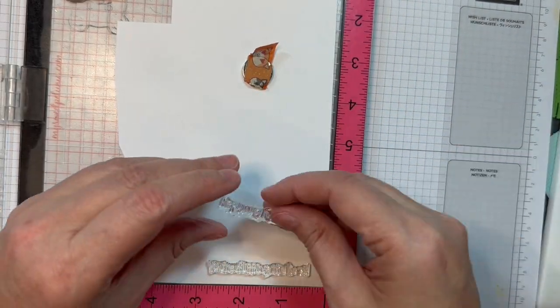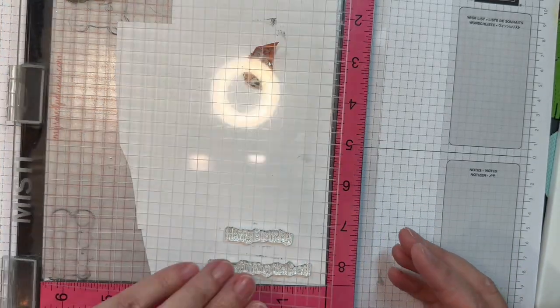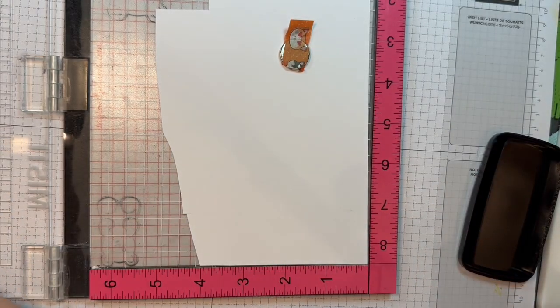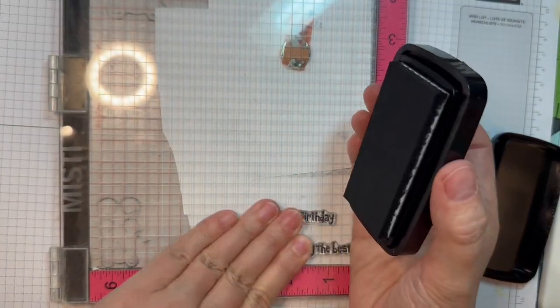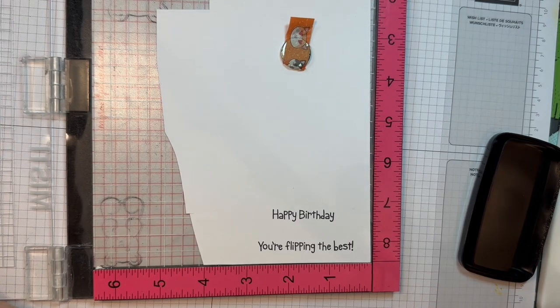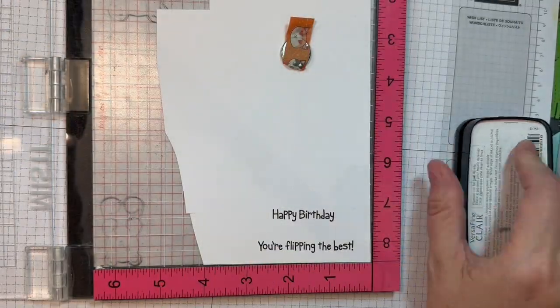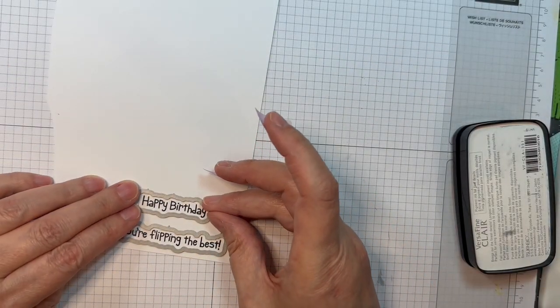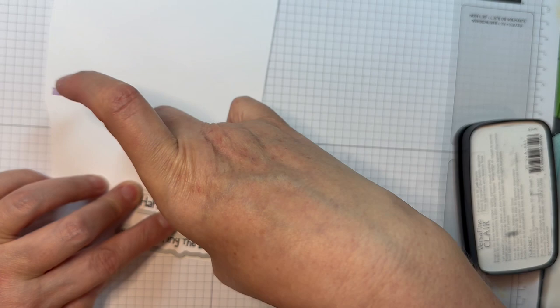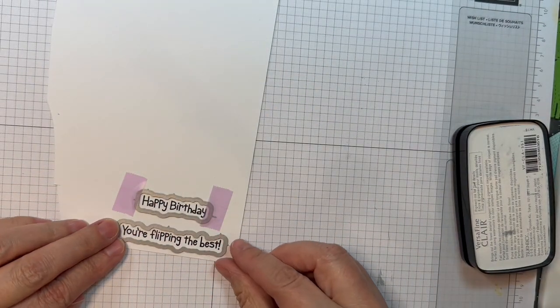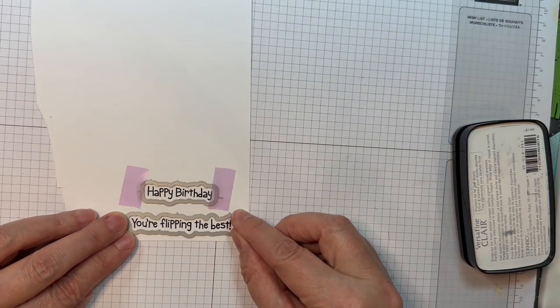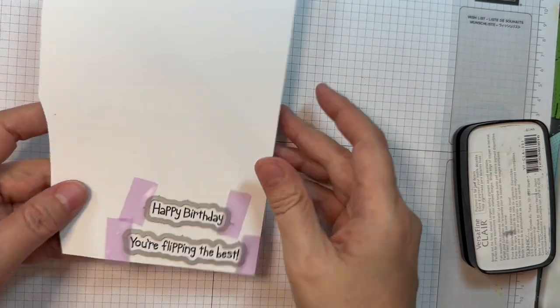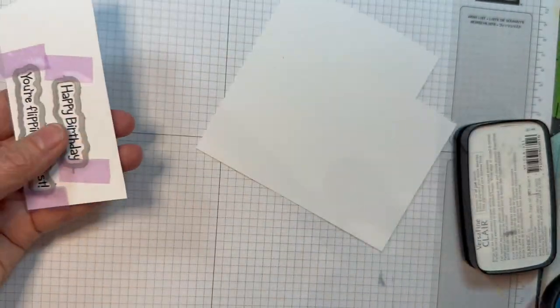Now I'm going to stamp two sentiments that are going to go on the inside from the Grilling with My Gnomies stamp set. I'm using VersaFine Clair Nocturne Ink and my Misti, and I will use the outline dies to cut them out. That's on paper tray ink white cardstock and I'm lining them up with some EZC tape and then I'll run that through my little Gemini machine.